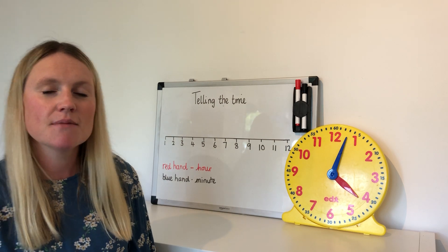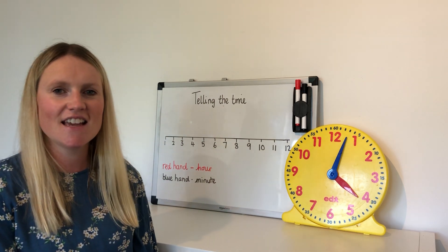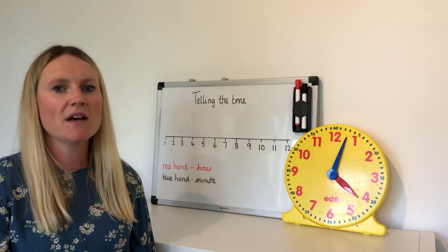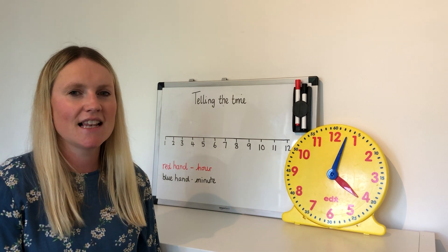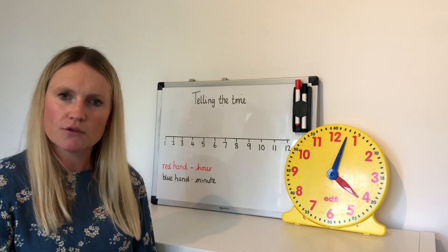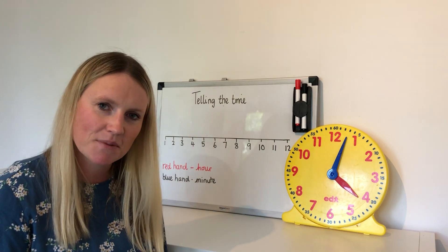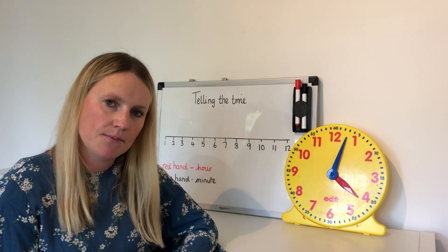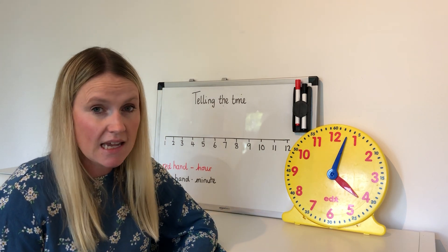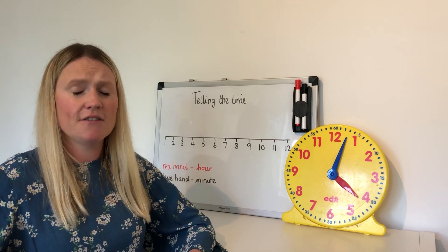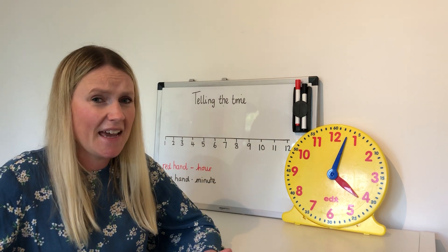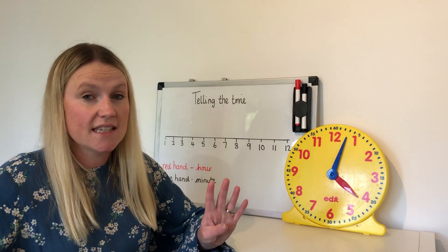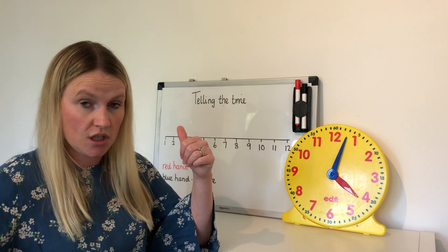Fantastic! Now have a think — which month is your birthday in? Shout it out nice and loud! I wonder how long you've got to wait, or have you just had your birthday? Now, how many months are there in the year? That's right, there are 12 months in the year. And let's think of the seasons — how many seasons are there in a year? That's right, there are four seasons: there's autumn, winter, spring and summer.